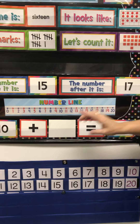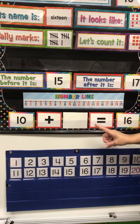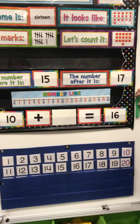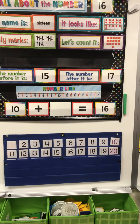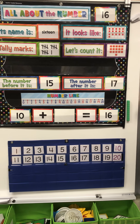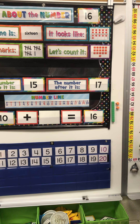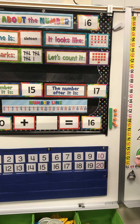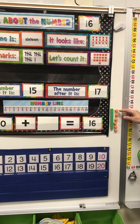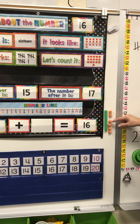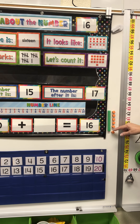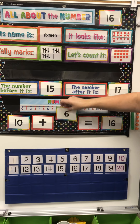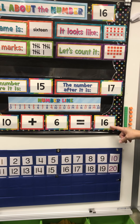Now we're going to do 10 plus something equals 16. Here's our 10 — remember, this long one is a 10 — and we're going to count until we get to 16. 10, 11, 12, 13, 14, 15, 16. So how many ones did we have to use? 1, 2, 3, 4, 5, 6. 10 plus 6 equals 16.